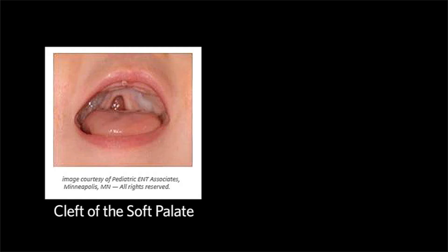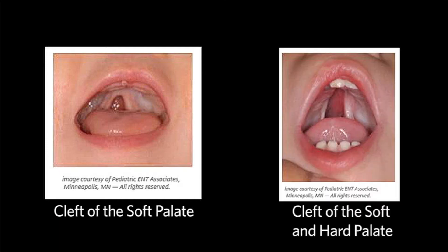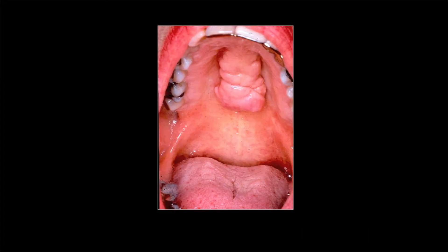In children, one may see clefts of the soft palate or both the soft and hard palate. On the hard palate, one may see a bony prominence known as the torus palatini.